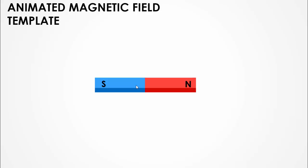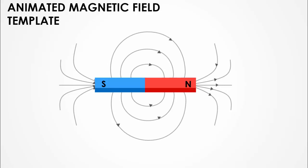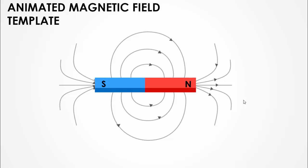You can see here this magnet which has a south and a north side. When I click, it will show you how the lines travel — the magnetic field travels from the south going towards the north, and then again from the north traveling to the south. Pardon me if any mistakes happen in this diagram because I'm not a science student.